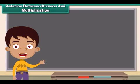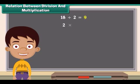Relation between division and multiplication. Friends, 18 divided by 2 is 9, and if we multiply this 2 and 9 we get 18. 2 multiply by 9 is 18.